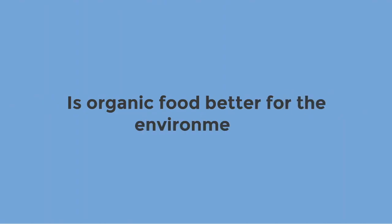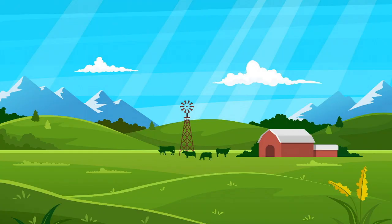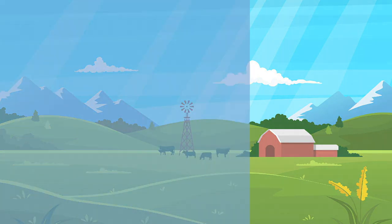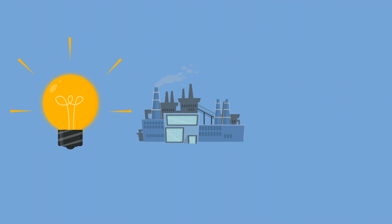Is organic food better for the environment? A recent meta-analysis looked at organic farming, analyzing several hundred foods and their impact on categories like energy consumption, greenhouse gas emission, and land needs.